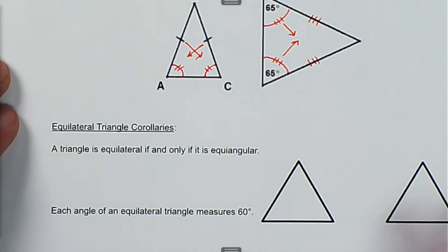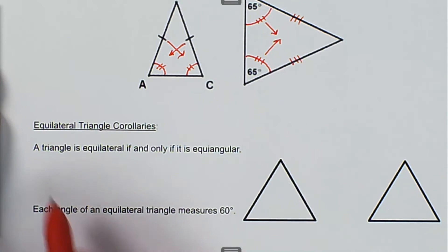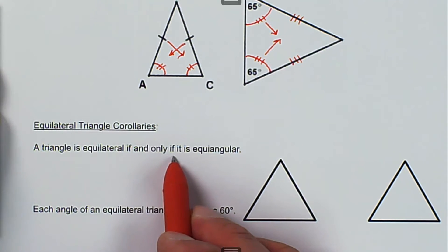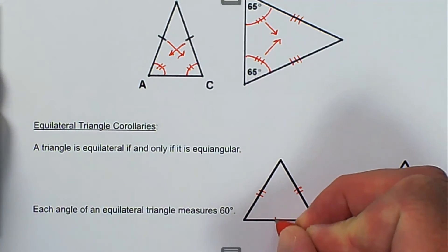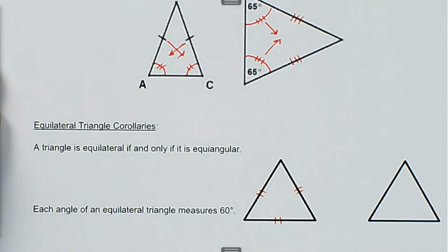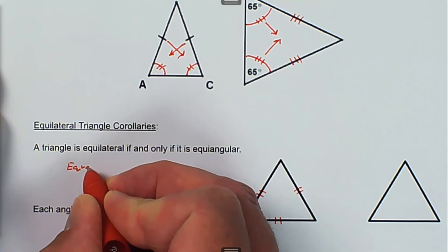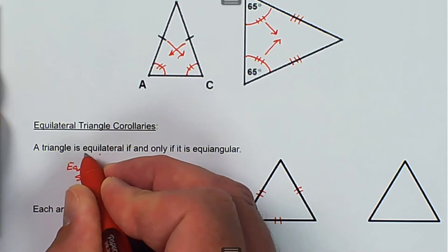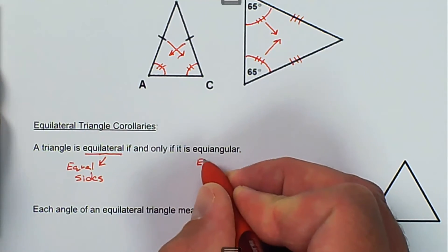Then we have equilateral triangle corollaries. A triangle is equilateral if and only if it is equiangular. So if we know that all the sides are congruent — that's equilateral, meaning equal sides — then it has to be equiangular, meaning equal angles.